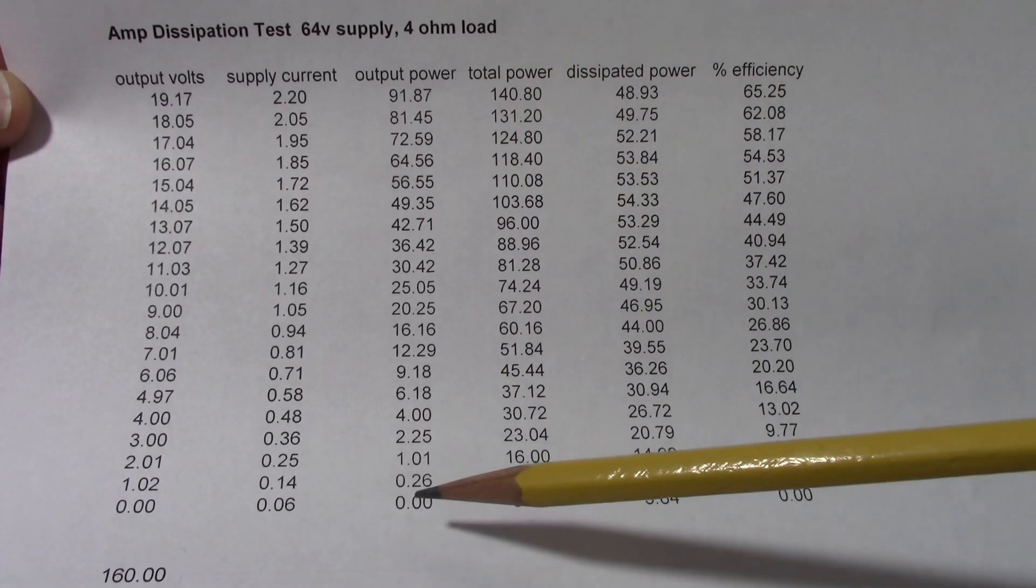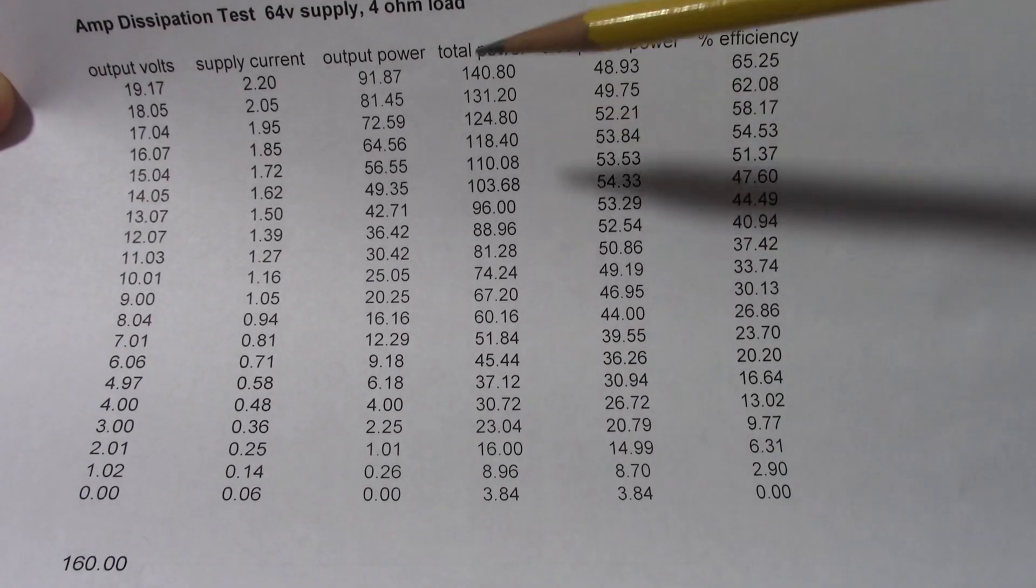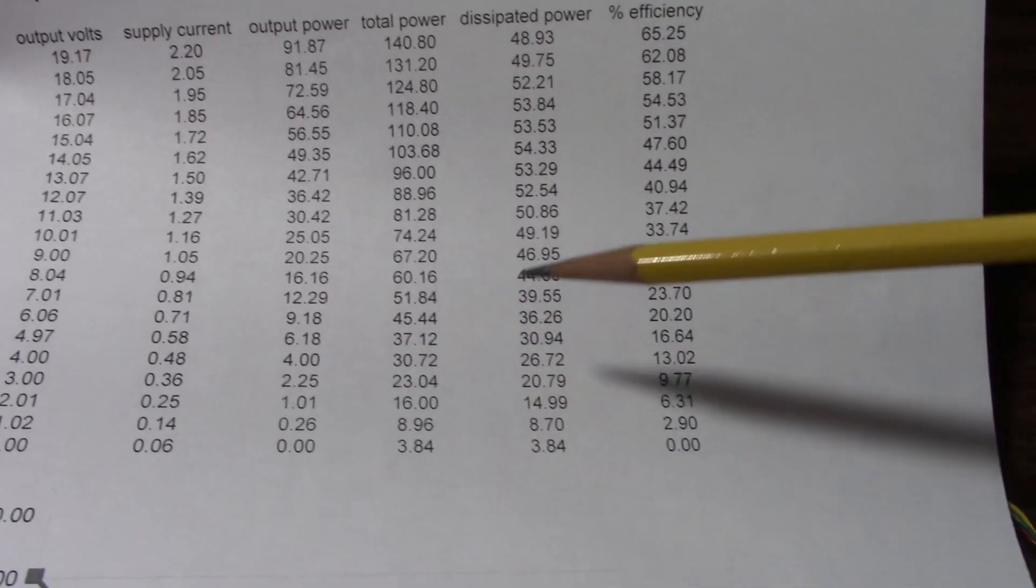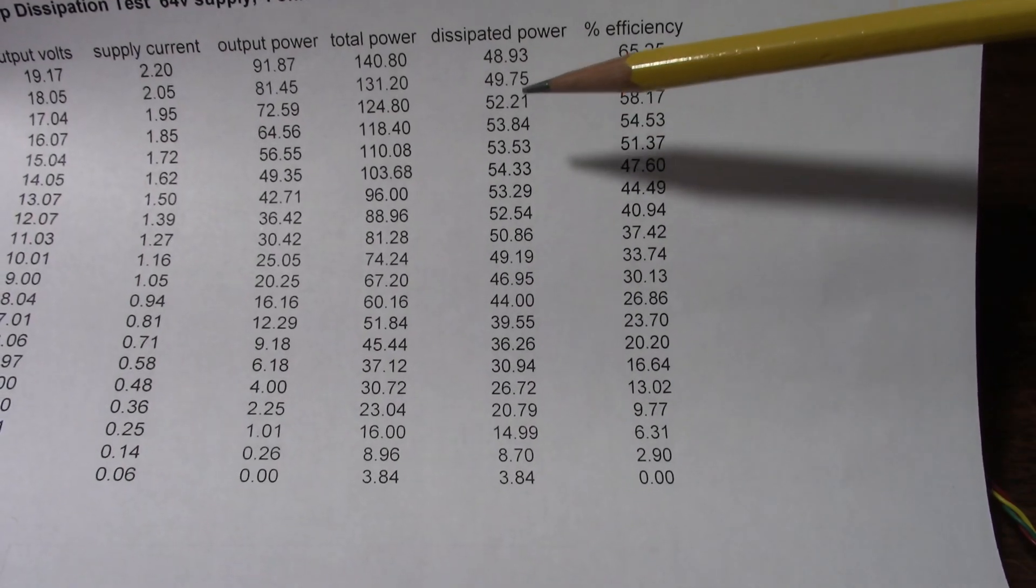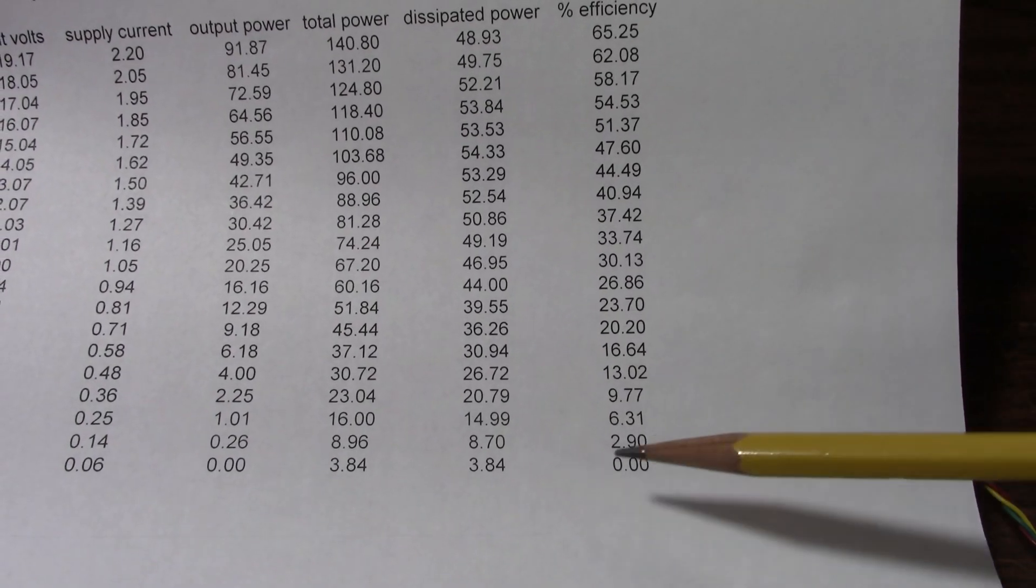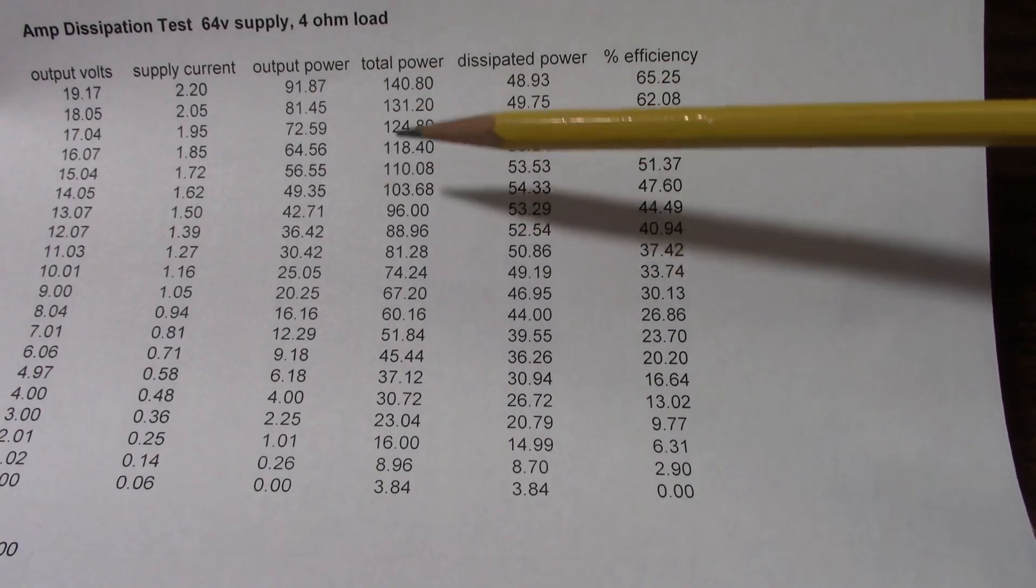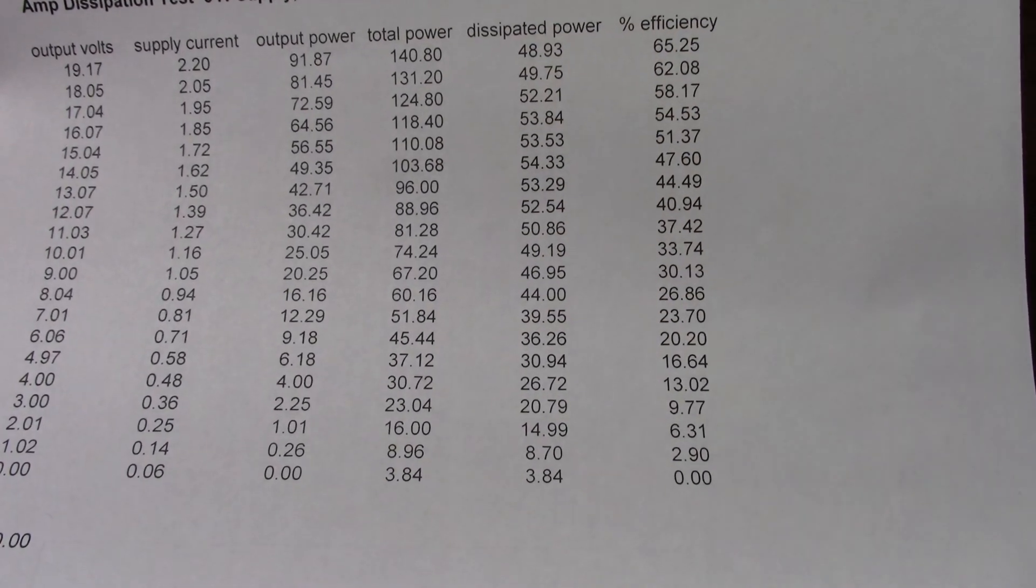This is the output power I calculated, this is the total power - that means drawn from the power supply, this is the dissipated power and the efficiency. And I calculated that using the output power and the total power drawn.